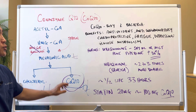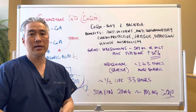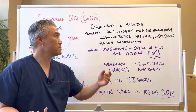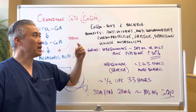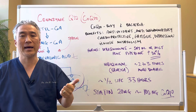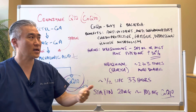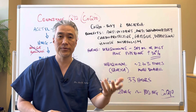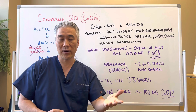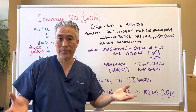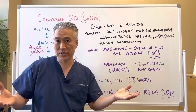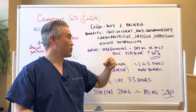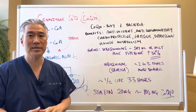CoQ10 is produced in the body. It's also produced by bacteria. Benefits: antioxidant, anti-inflammatory, it's cardioprotective, improves fatigue for obvious reasons, it improves energy production and ATP, depression, glucose metabolism.